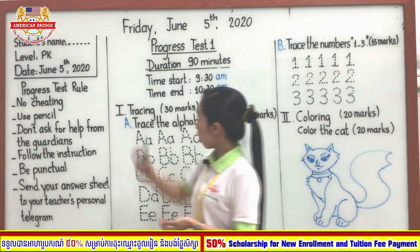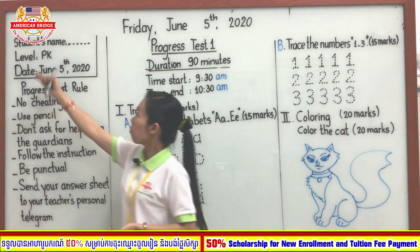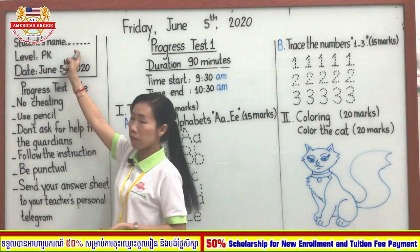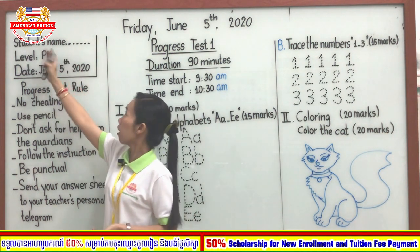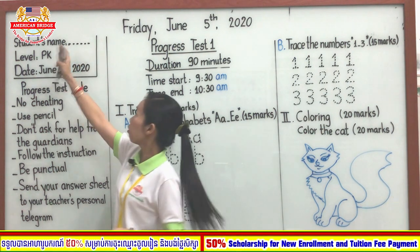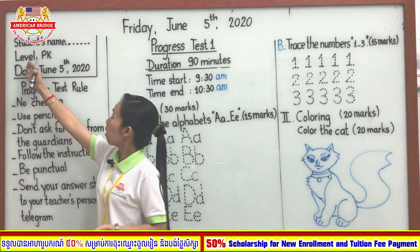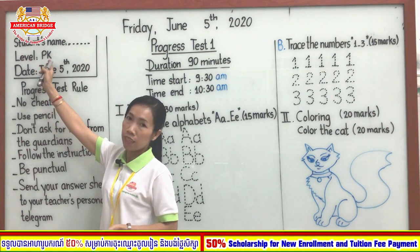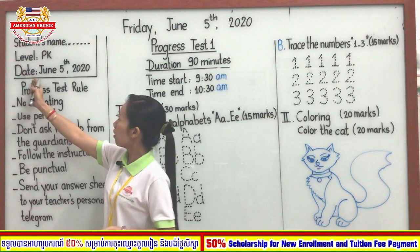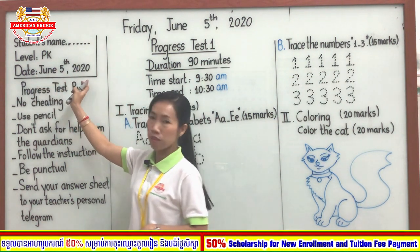If you write in the book, please write your student name here. For example, student name: Dara Sothee — you write Dara Sothee here. Level: PK, it means that you study pre-kid level. The date is today, June 5th, 2020.